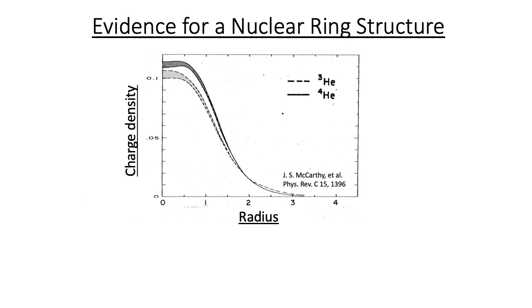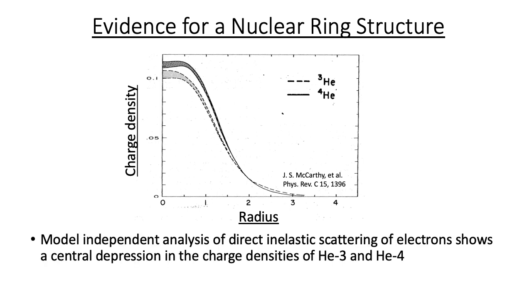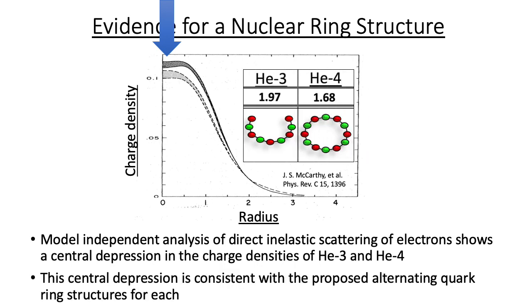Direct evidence of nuclear structure is sparse. However, model-independent analysis of deep inelastic scattering experiments indicates a central depression within helium-3 and helium-4. This central depression is consistent with the proposed alternating ring structures for each.